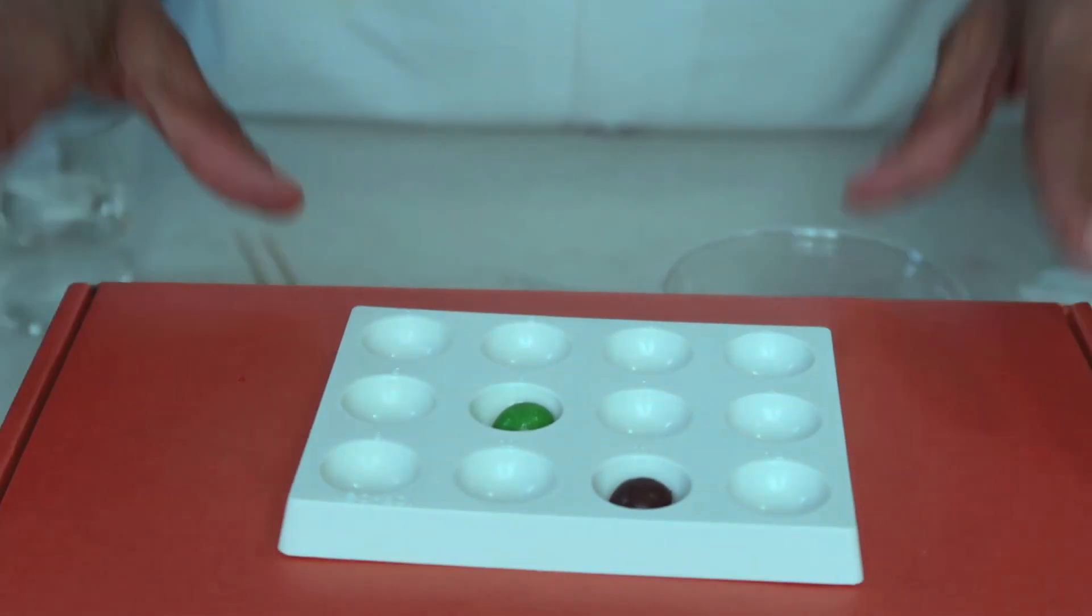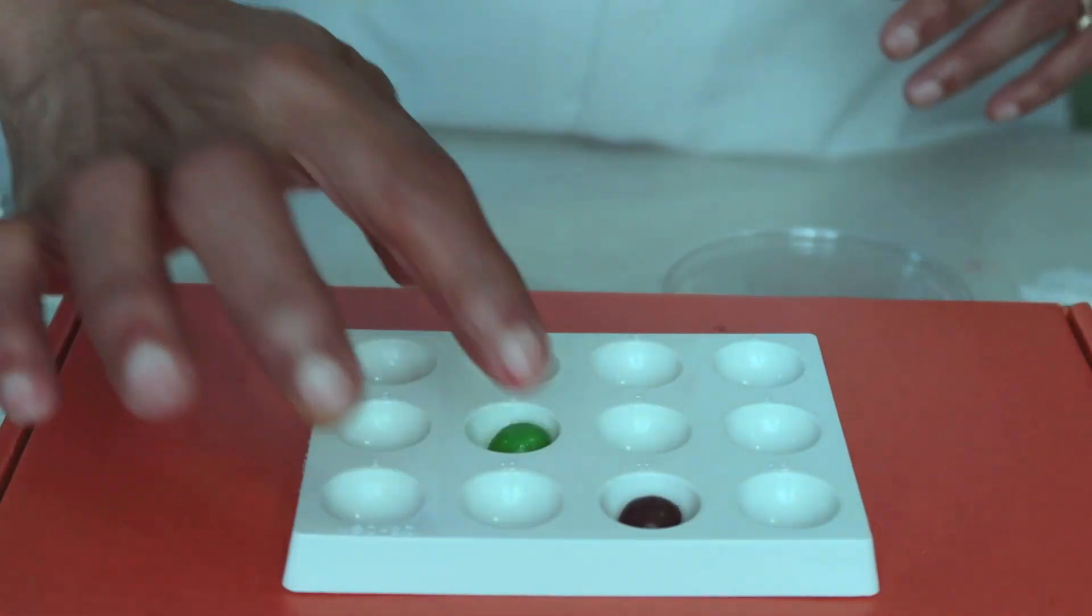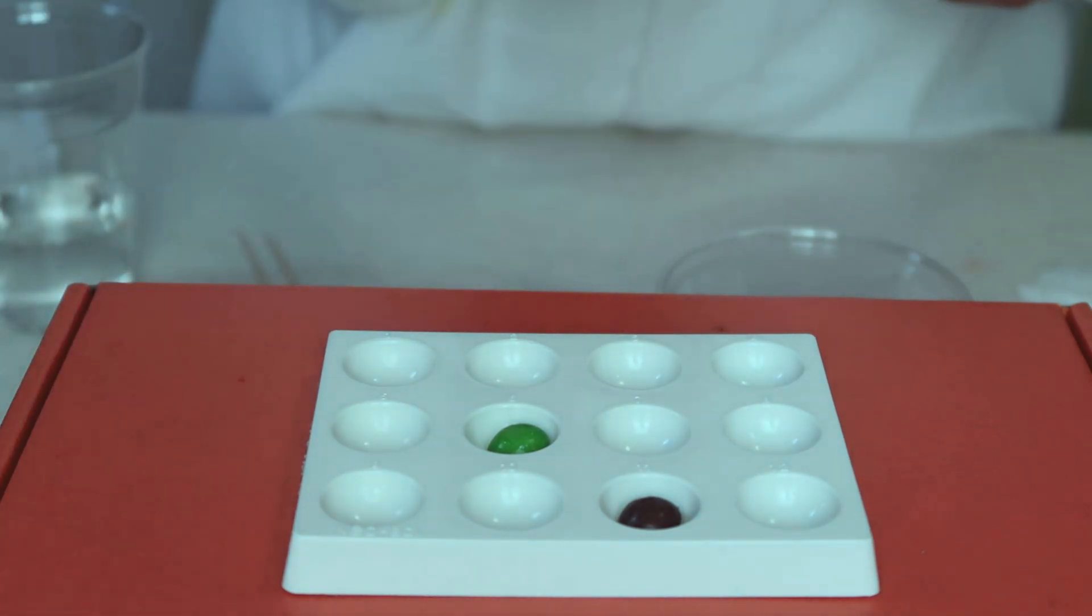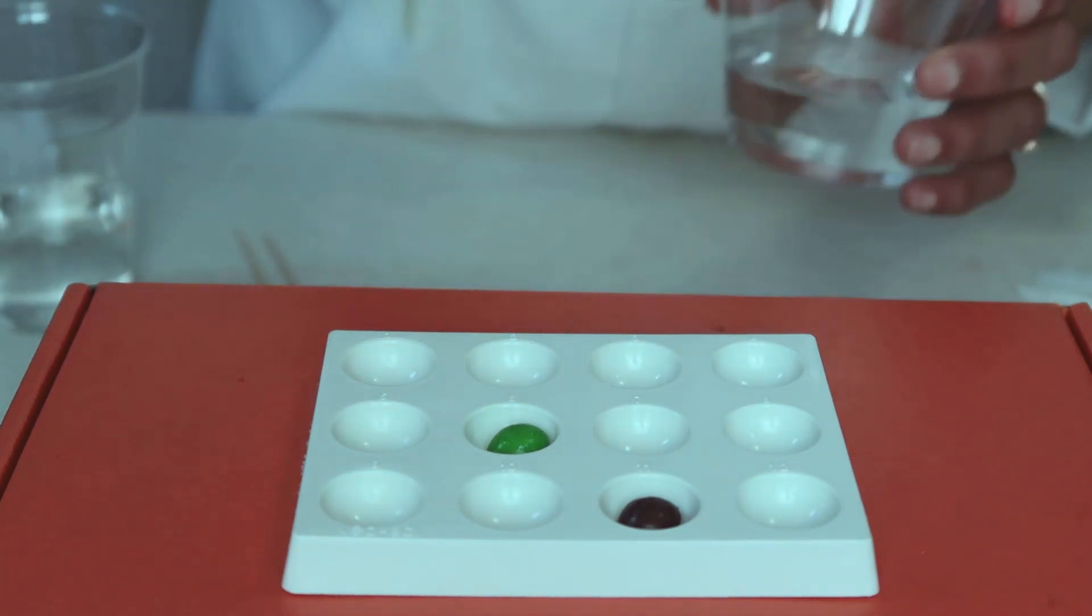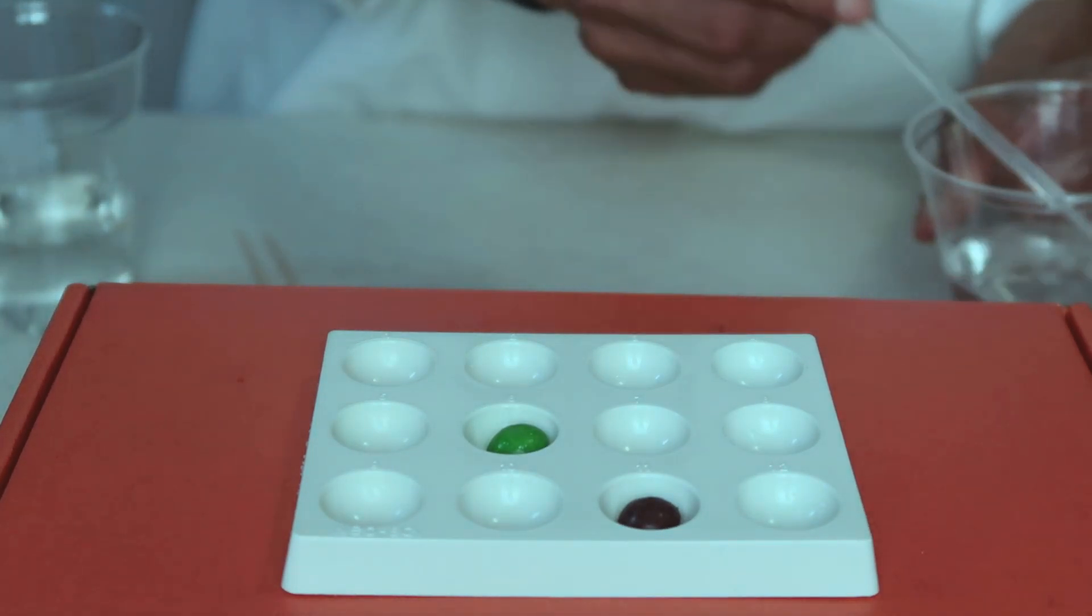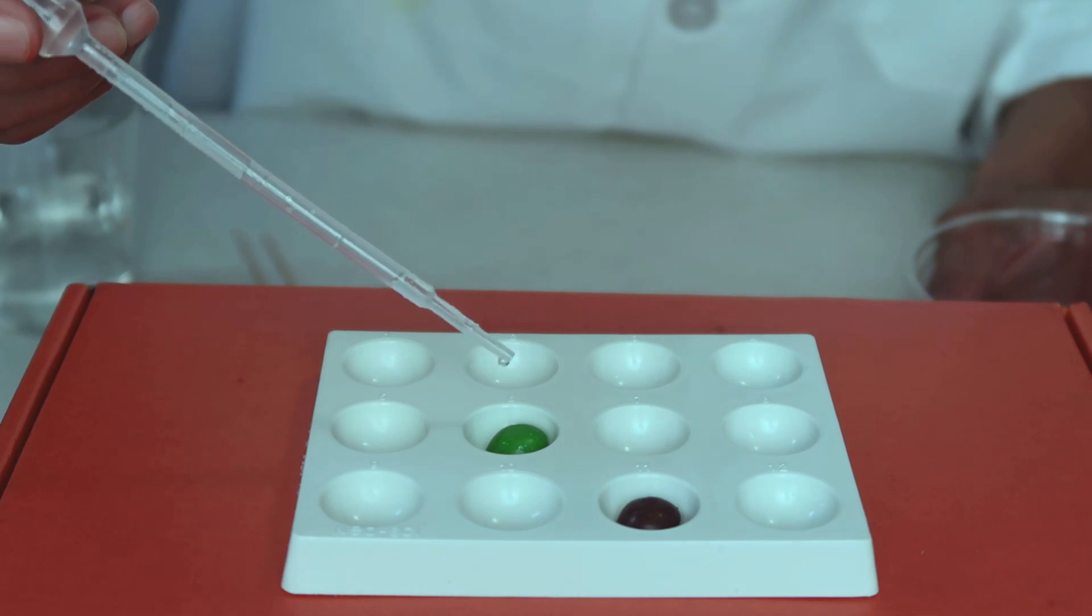Step one. We're going to put purple and green Skittles in our little wells and we're just going to take some plain water and put a few drops.